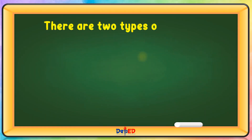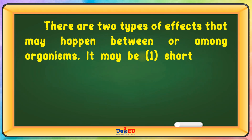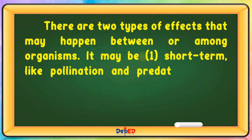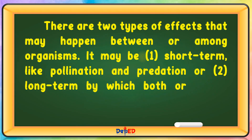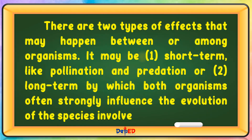There are two types of effects that may happen between or among organisms. One is short-term, like pollination and predation. Or two, long-term, by which both organisms often strongly influence the evolution of the species involved.